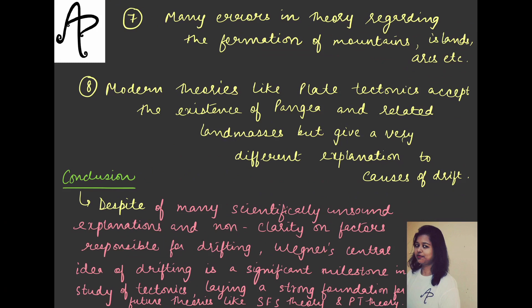Modern theories talking about the distribution of oceans and continents — for example, plate tectonic theory —